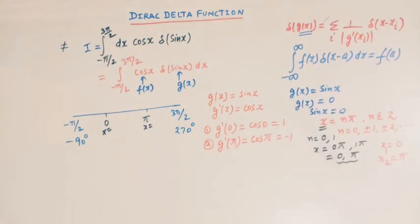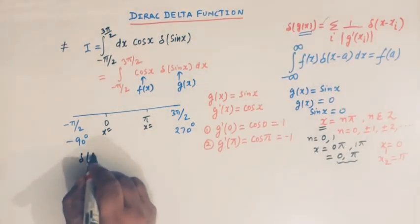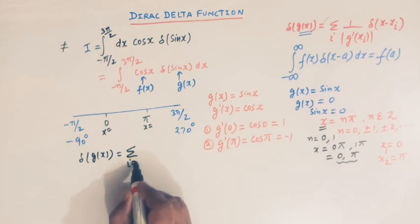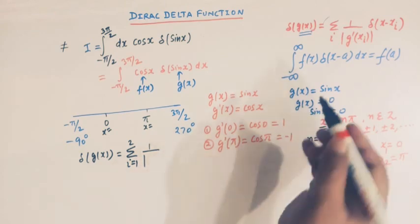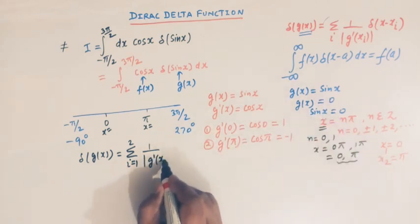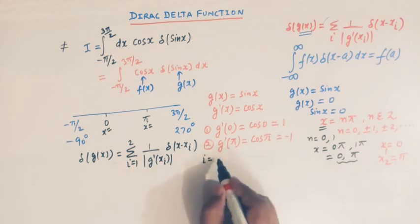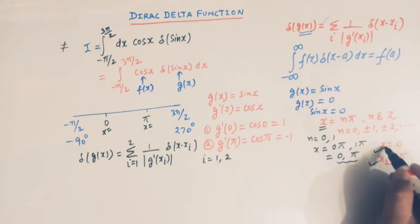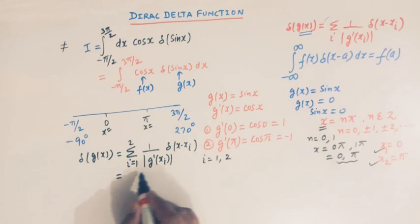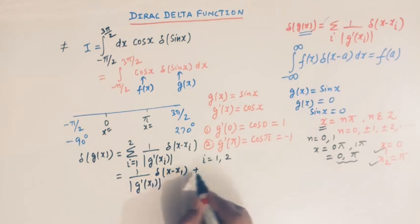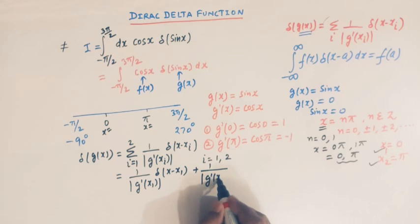Now applying the formula for δ(g(x)), we write δ(sin x) as a sum from i = 1 to 2: (1/|g'(x₁)|)·δ(x − x₁) + (1/|g'(x₂)|)·δ(x − x₂). Substituting x₁ = 0 and x₂ = π, this becomes (1/|g'(0)|)·δ(x − 0) + (1/|g'(π)|)·δ(x − π).